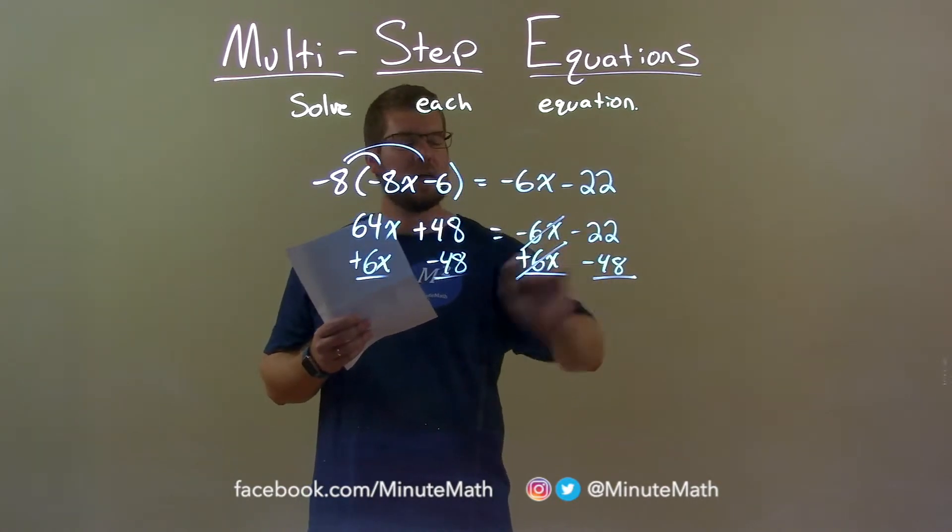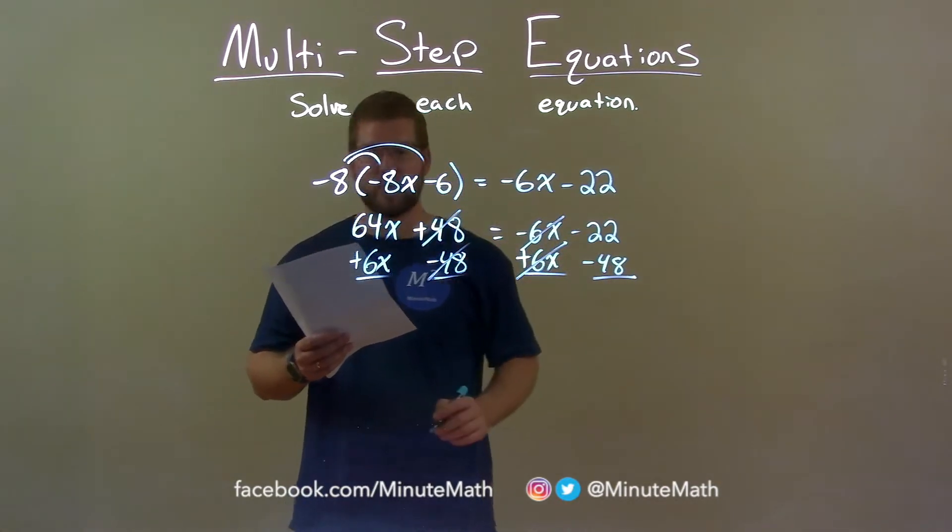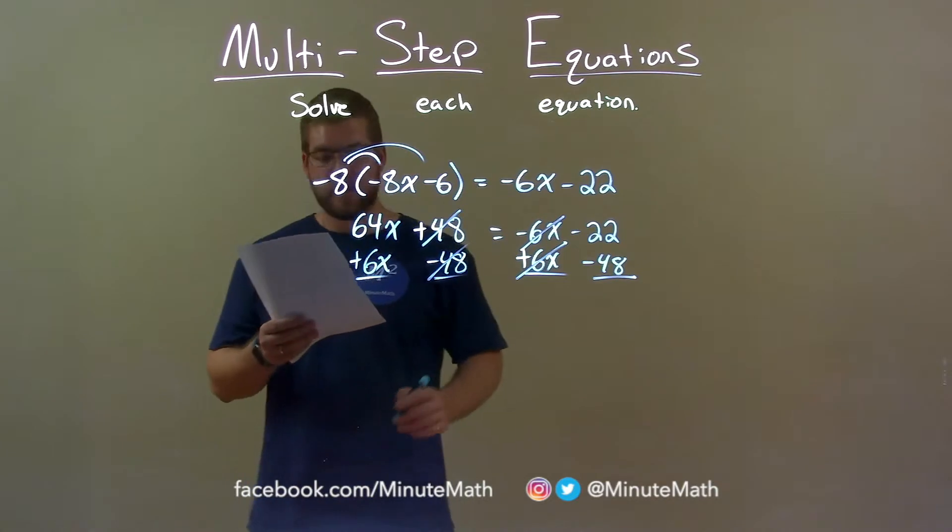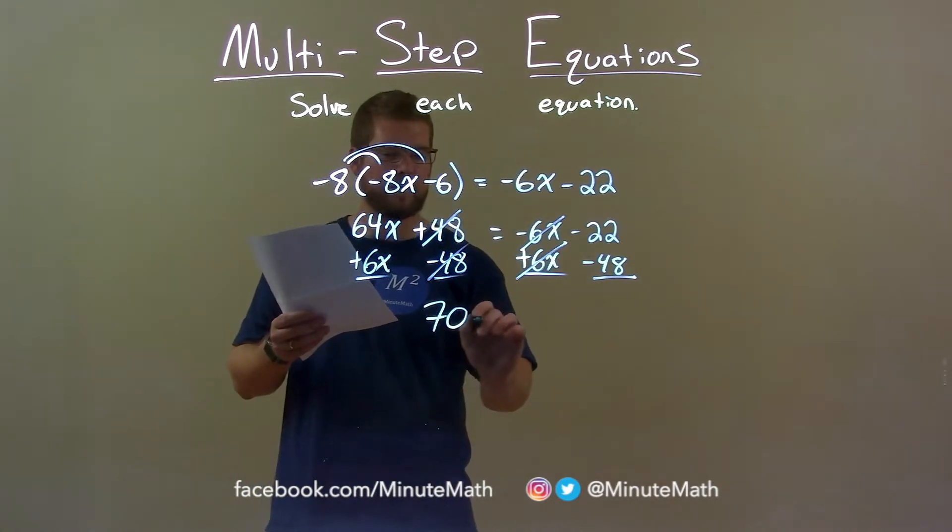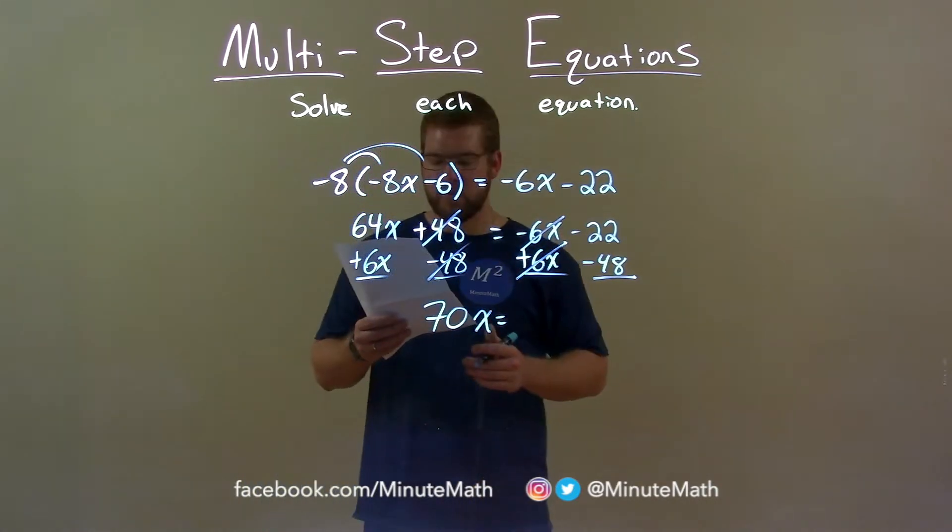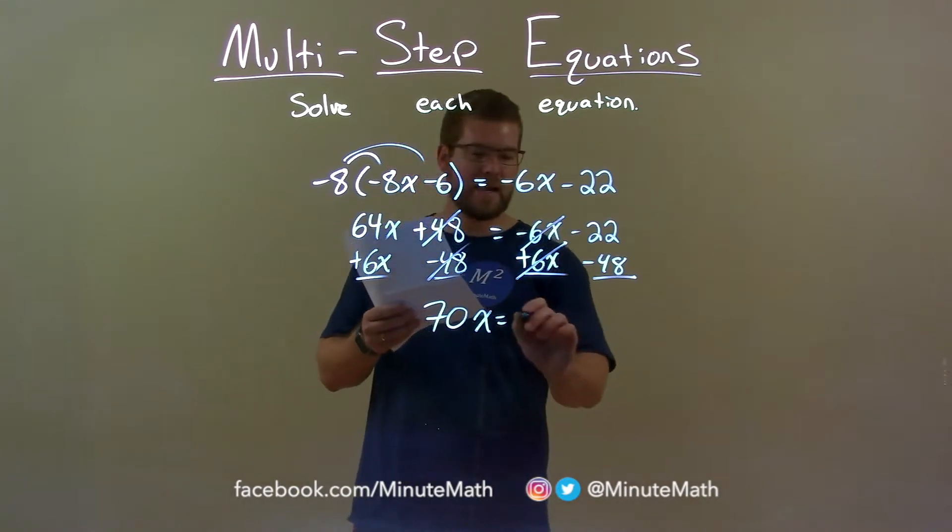The 6x's will cancel on the right, then the left 48's will cancel. 64x plus 6x is 70x, and negative 22 minus 48 is negative 70.